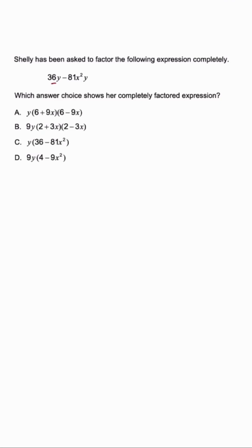You have to be mindful that we have perfect squares, and we're talking about a binomial. So there's a high chance that we're dealing with the difference of squares. But what we need to do first is take out a greatest common factor, and our GCF would be 9y. Once we divide the expressions by 9y, we're going to have 4 minus 9x squared.